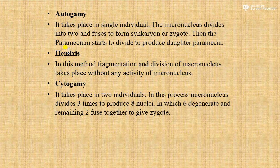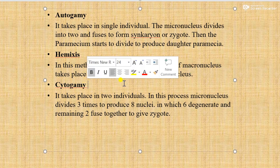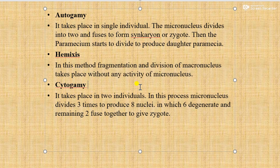Another type of reproduction is hemixis. In this method, fragmentation and division of macronucleus takes place without any activity of micronucleus.